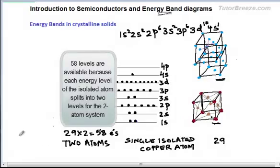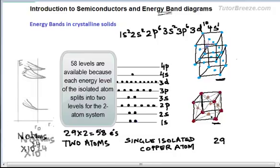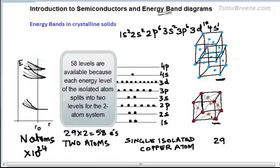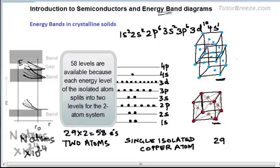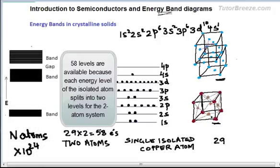If we bring more atoms — say n atoms where n is about 10²⁴, of the order of the Avogadro number — then each energy level of the individual isolated atom splits into n levels. Instead of energy levels we now have energy bands, as some energies shift a little upward and others a little downward. The individual levels within a band are very close together and vast in number, so we can think of them as forming a continuous distribution of energy within a band. Between adjacent energy bands there are gaps — forbidden regions with no allowed energy levels — called the energy gap.